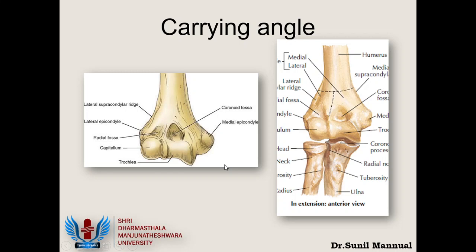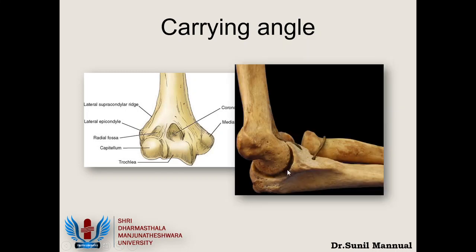In flexion, the anterior surface of the trochlea comes in contact with the anterior surface of the ulna. There is no tilt in the anterior surface of the trochlea — the tilt exists only on the undersurface. So the moment we move from extension to flexion, the anterior trochlear surface contacts the proximal ulna and therefore the carrying angle disappears.